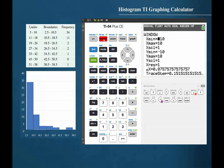So press window. Our X minimum value should be the lower bound of the first class. That is 2.5.